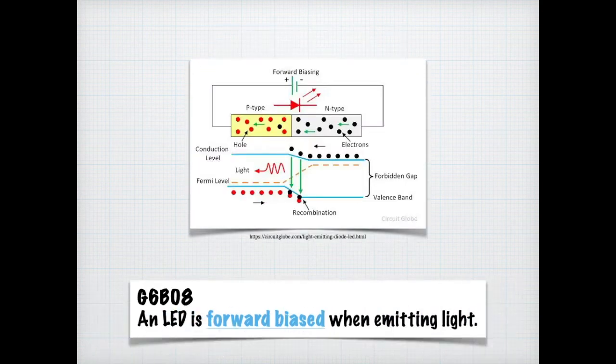You might be asked on the exam how an LED is biased when it's emitting light. One thing I'd like to point out about LEDs is if you put it in backwards, you could destroy the LED. So that said, for the exam, you need to know that an LED is forward biased when emitting light. And that's described by this diagram that you see.